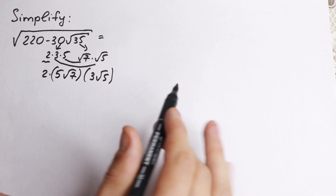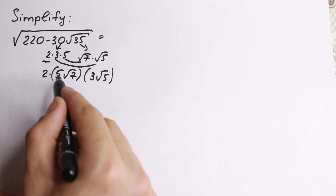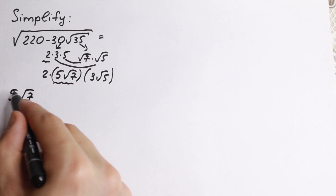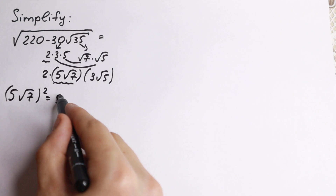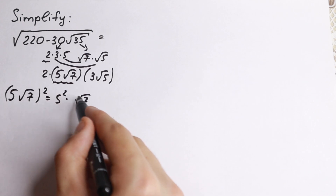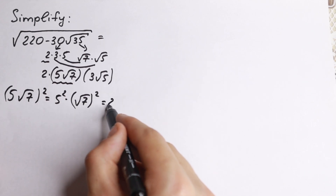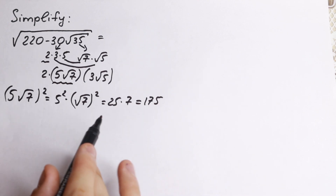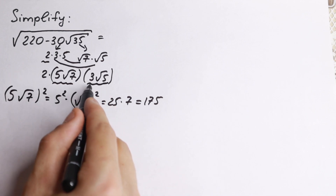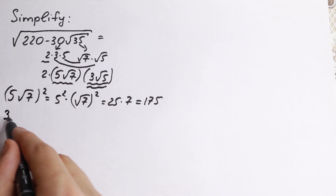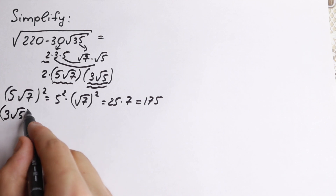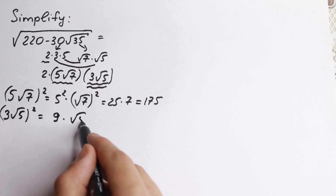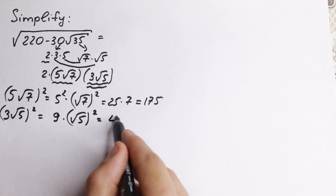But right now I'm going to work with these elements. First of all, I want to take 5 square root of 7 and square it. So we have 5 square root of 7 to the second power — that gives us 5 squared times square root of 7 squared, which equals 25 times 7, equal to 175. And let's do the same thing with 3 square root of 5 — squaring it gives us 3 squared times square root of 5 squared, which equals 9 times 5, equal to 45.